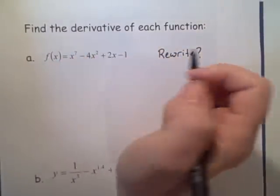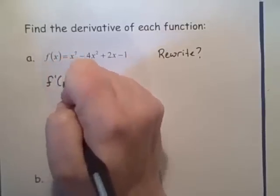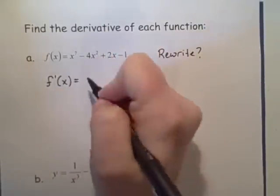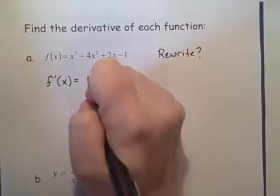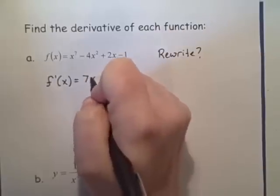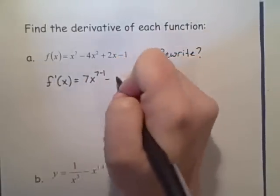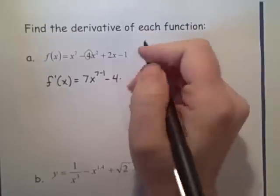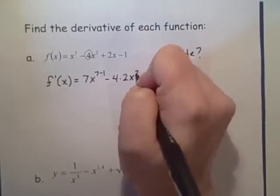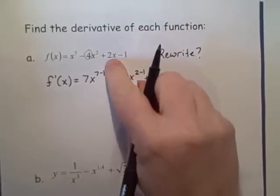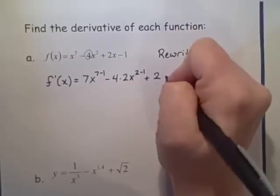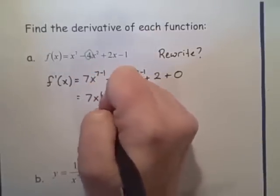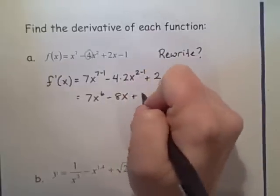So the next thing I do is go ahead and take the derivative. I want to give the derivative the correct name — if we're using function notation f of x, then the name is going to be f prime of x. Going through term by term: I bring the exponent down in front, giving seven x to the six. The four just goes along for the ride; the derivative of x squared gives two x to the one. The derivative of two x is just two, and the derivative of minus one is zero. So I end up with seven x to the sixth minus eight x plus two.